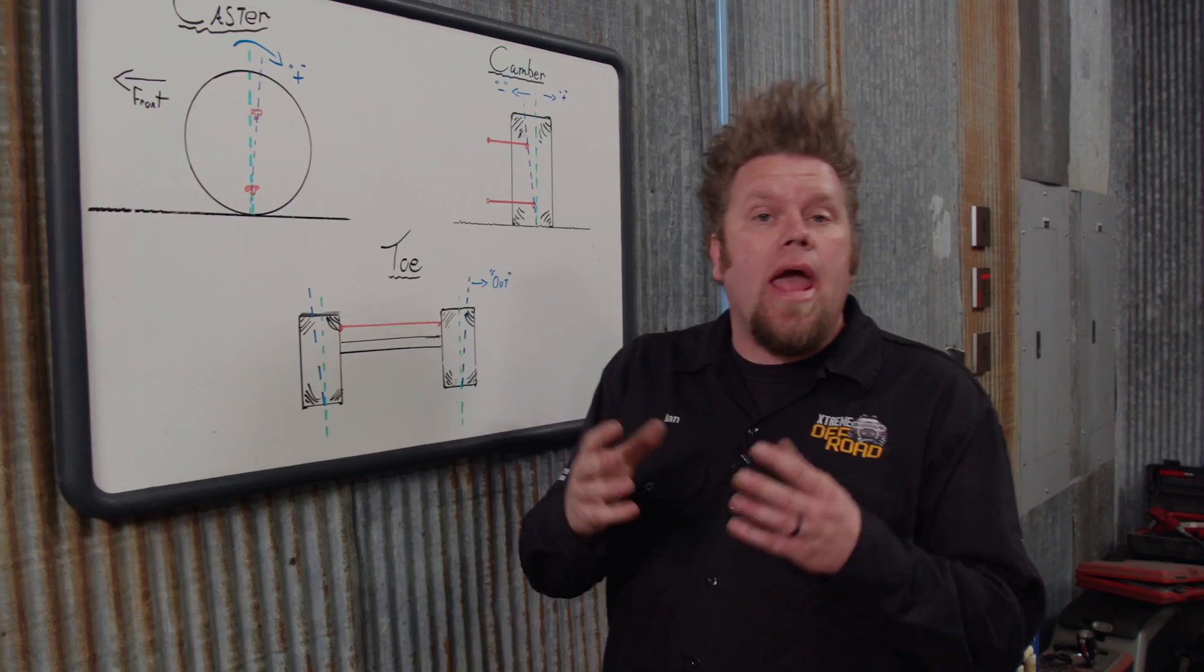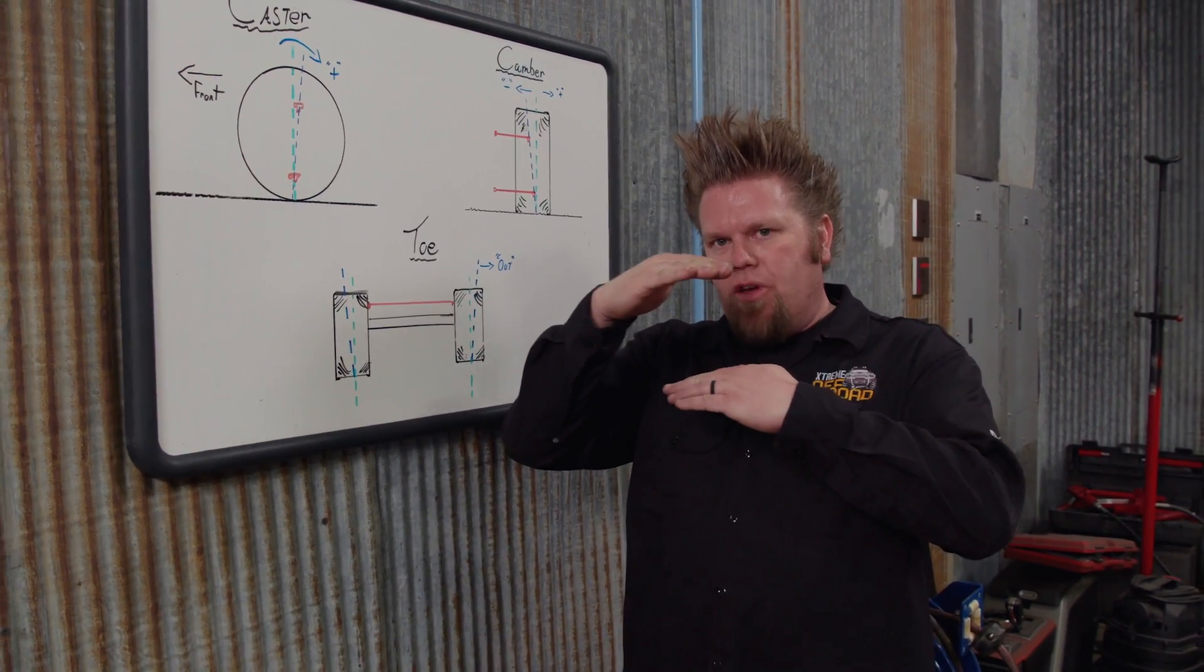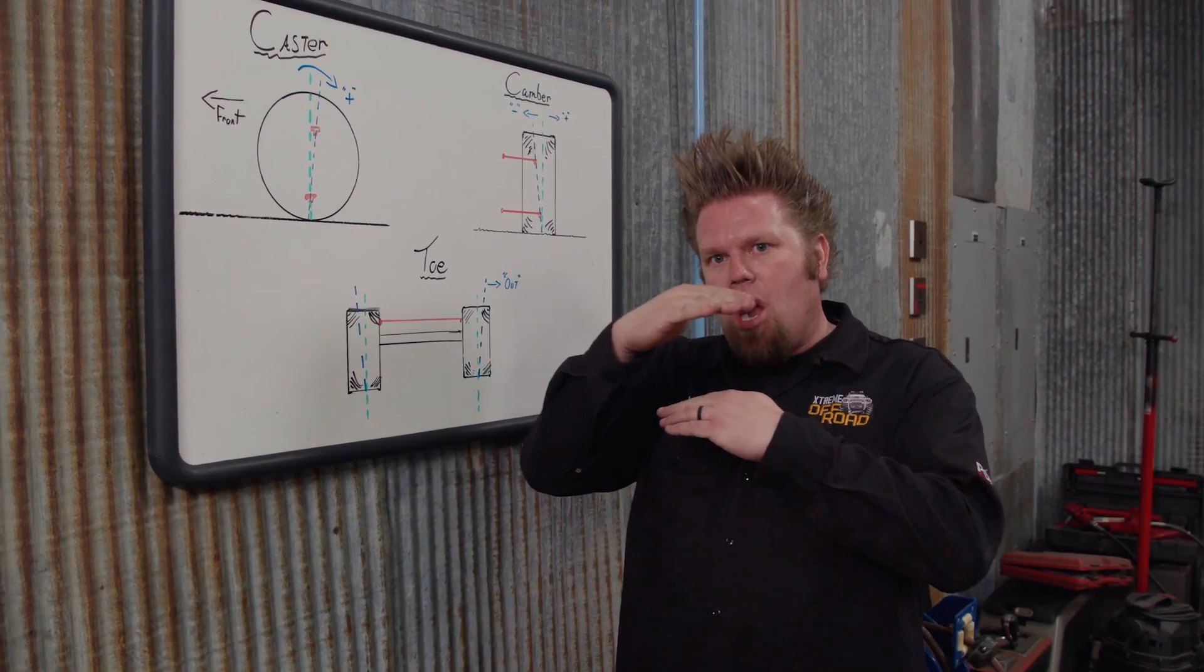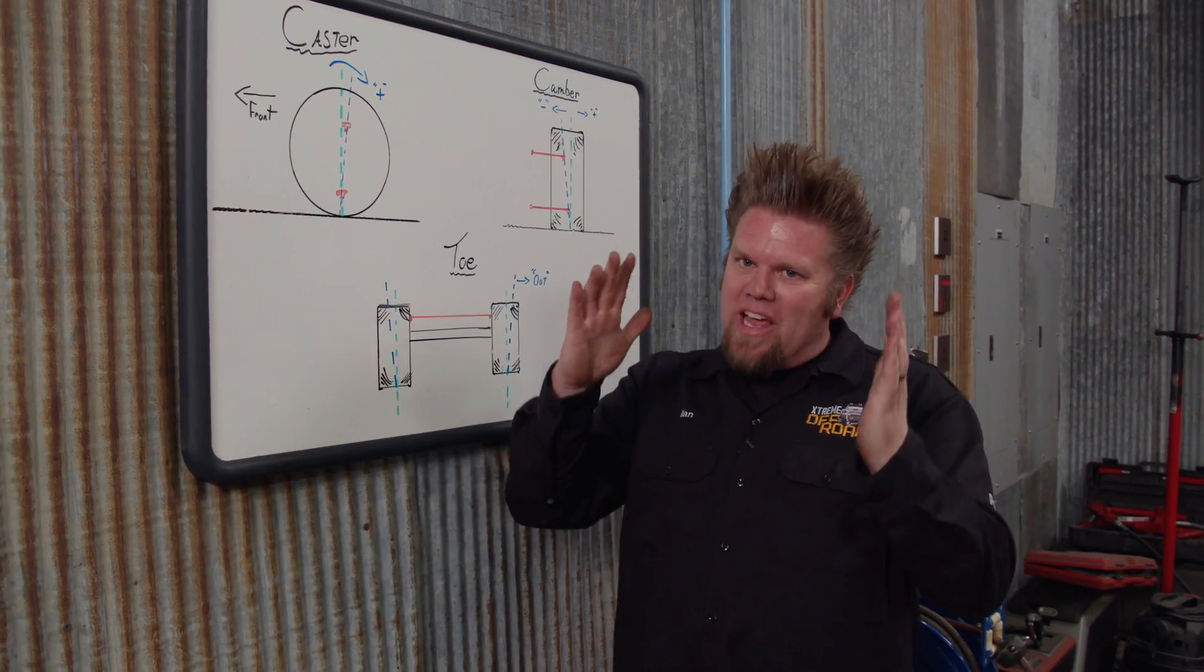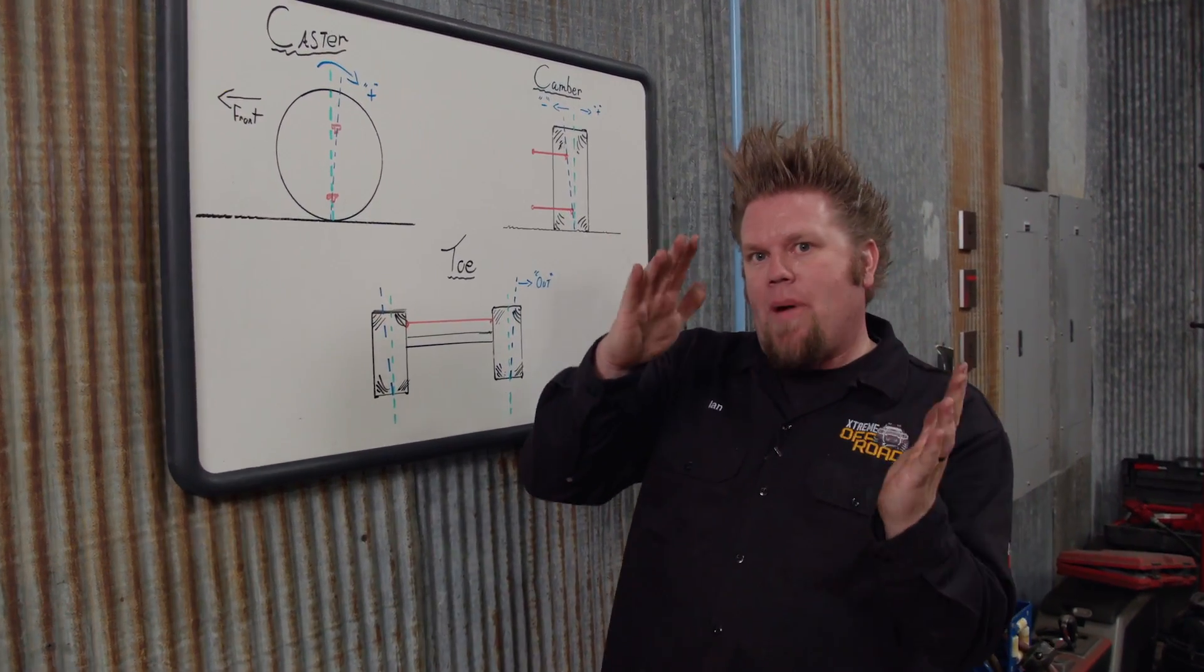You adjust caster on an A-arm vehicle by moving the location of the upper A-arm in the suspension system. In a solid axle car, you're twisting the whole axle either backwards or forwards.